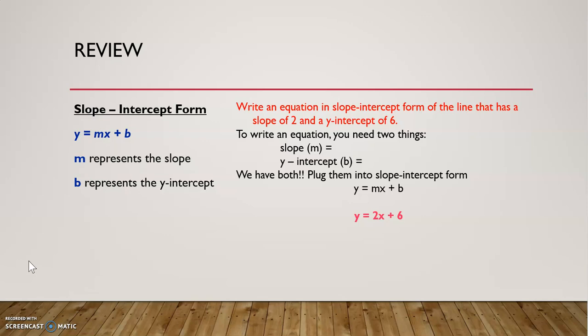b is our y-intercept. That is the point where we cross the y-axis. Now when we're crossing the y-axis, we know that the x-coordinate will be zero at that point.